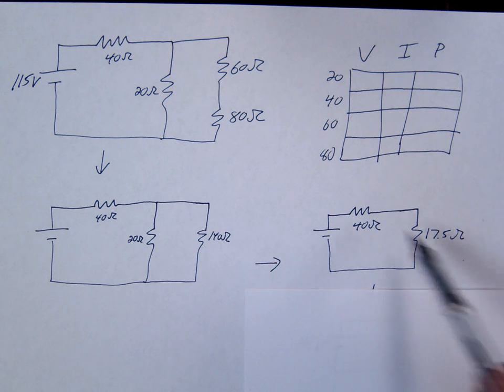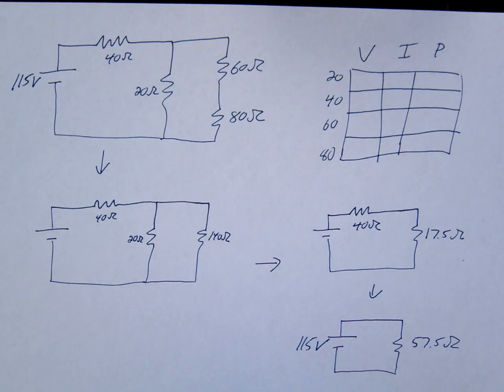And then lastly, these are in series. We're going to combine those two together and we're left with one single resistor, 57.5. So if I asked you for the equivalent resistance, that would be it. 57.5 is the equivalent resistance.